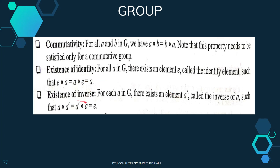The third property is existence of identity. There exists one member in the group called the identity element, normally represented by E. For multiplication, the identity element is 1, so a × 1 = 1 × a = a. That is the existence of identity.